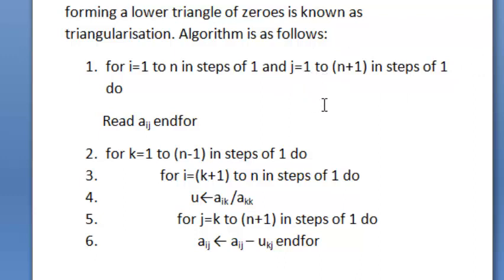That is, 1 more than N in steps of 1. It is also incremented by 1. What we do here, we read Aij that means we read all these coefficients of X. Now, here the for loops end.